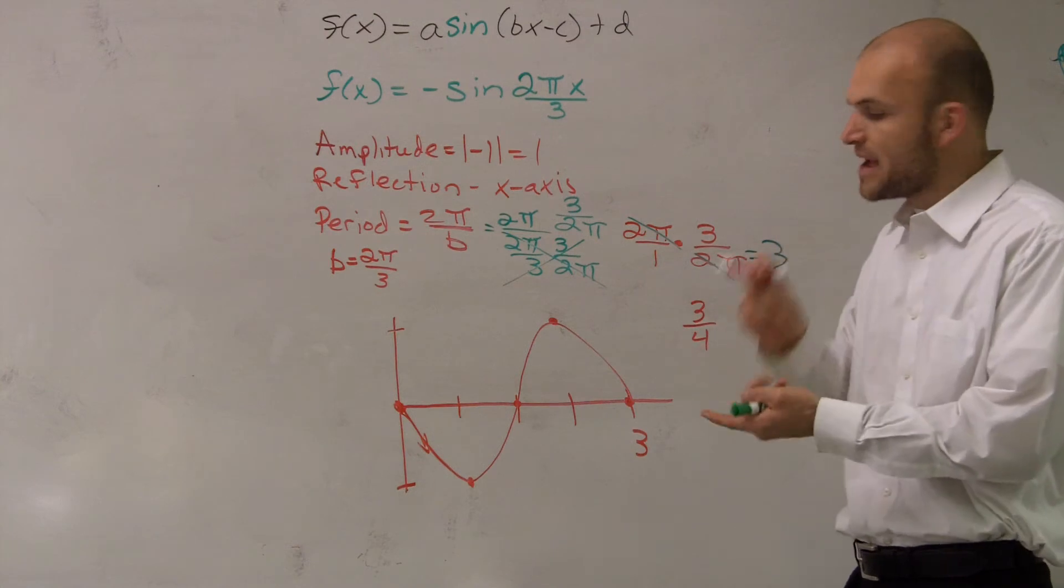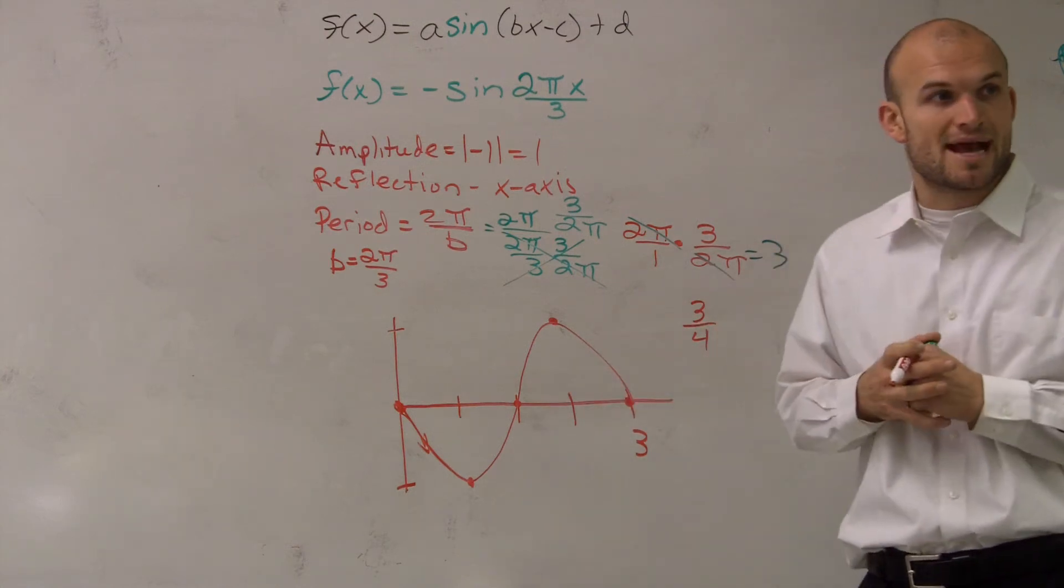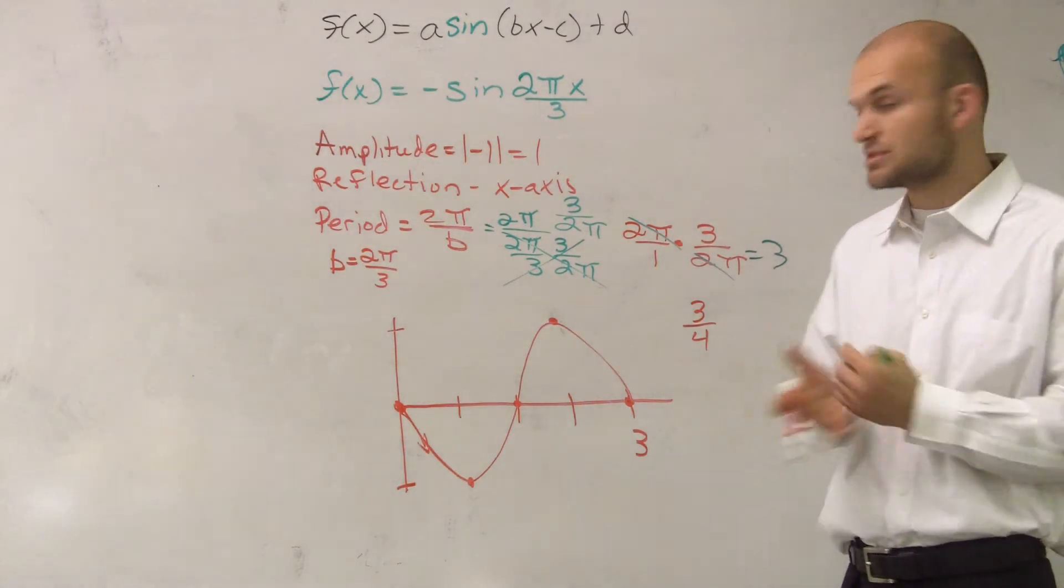For a sine graph, you have maximum, minimum, intercept, and the end of the period. So therefore, what I'm doing is I'm adding 3 fourths. Essentially what I'm doing.